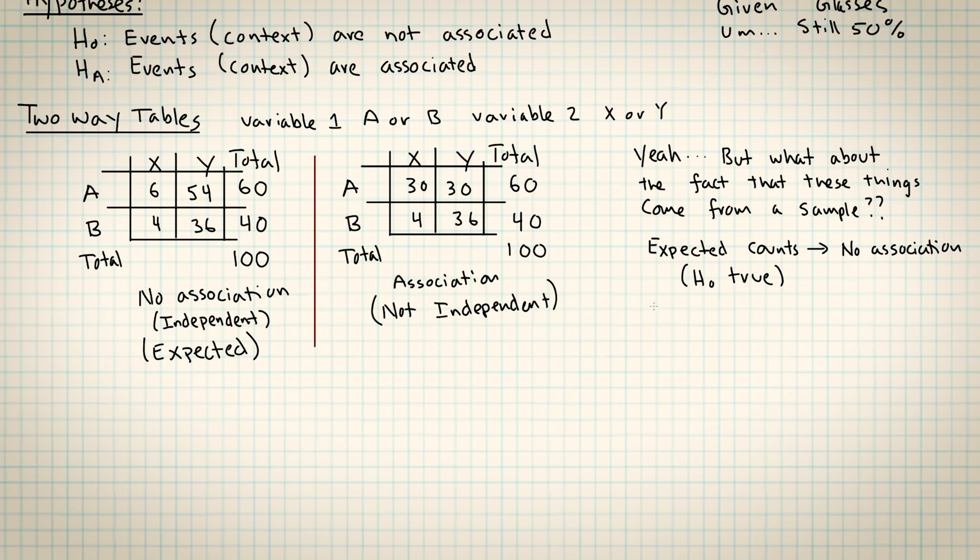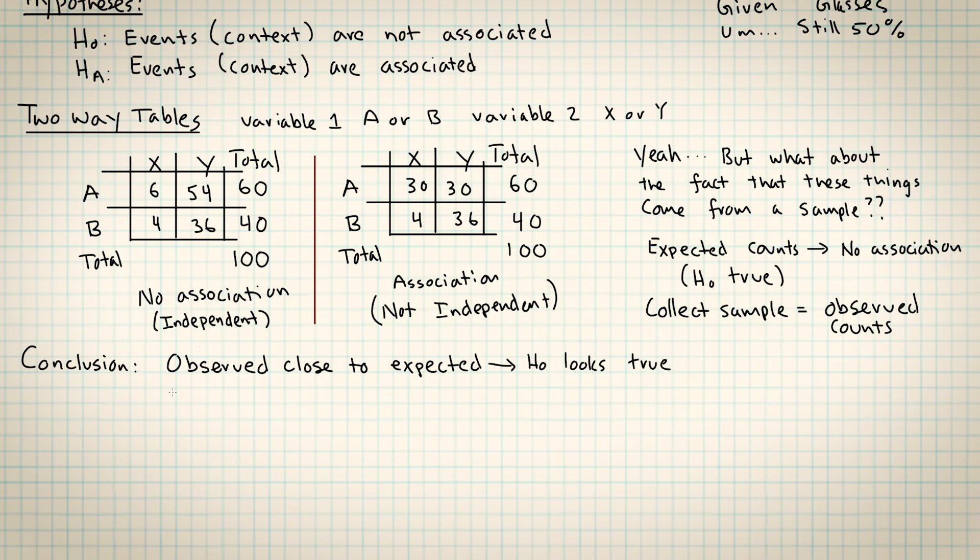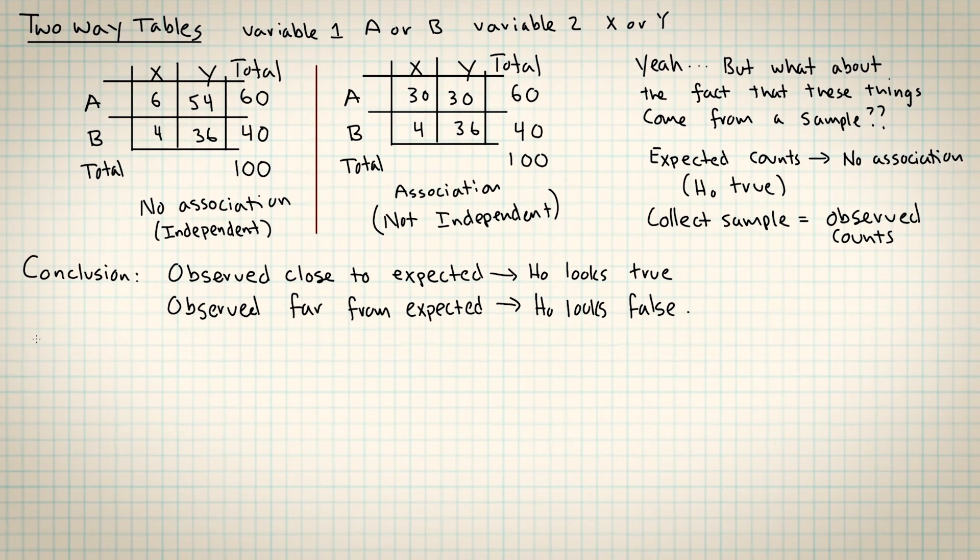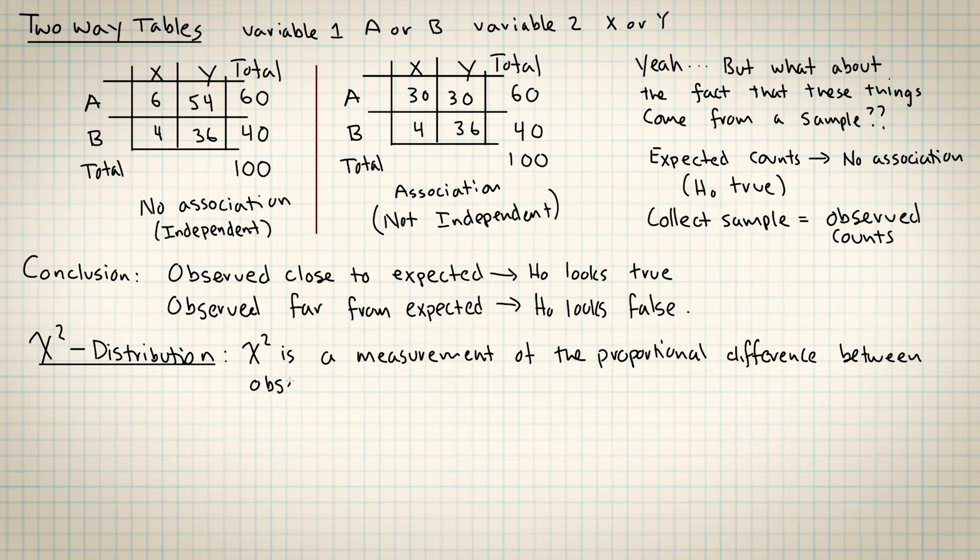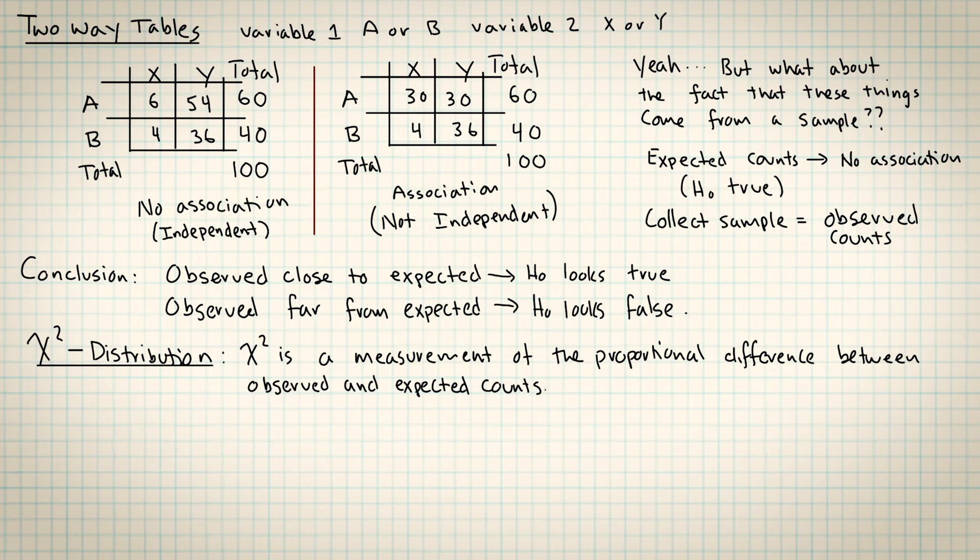We're going to have to bring another probability distribution into this. We have the binomial distribution, the normal distribution, the t distribution. Shout out to William C. Lagossett. And now we're going to need this chi-square distribution. The job of this one is to measure if the observed counts are coming in as close to the expected counts or as far away from the expected counts. There are a lot of different kinds of hypothesis tests and statistics problems that use the chi-square distribution.